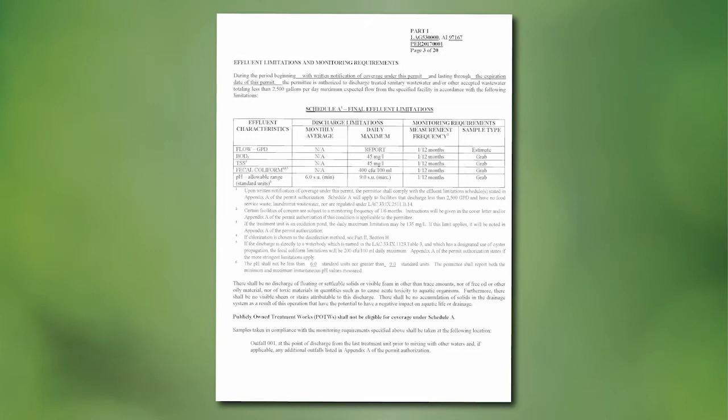Depending on your measurement frequency — meaning how many times you have to do your testing — it could be annually, semi-annually, or quarterly, depending on what's listed. The monthly average and the daily maximum are your limits. For example, if you have an annual monitoring period for your BOD, your BOD daily maximum limit is 45 milligrams per liter, so you cannot exceed the 45 milligrams per liter.